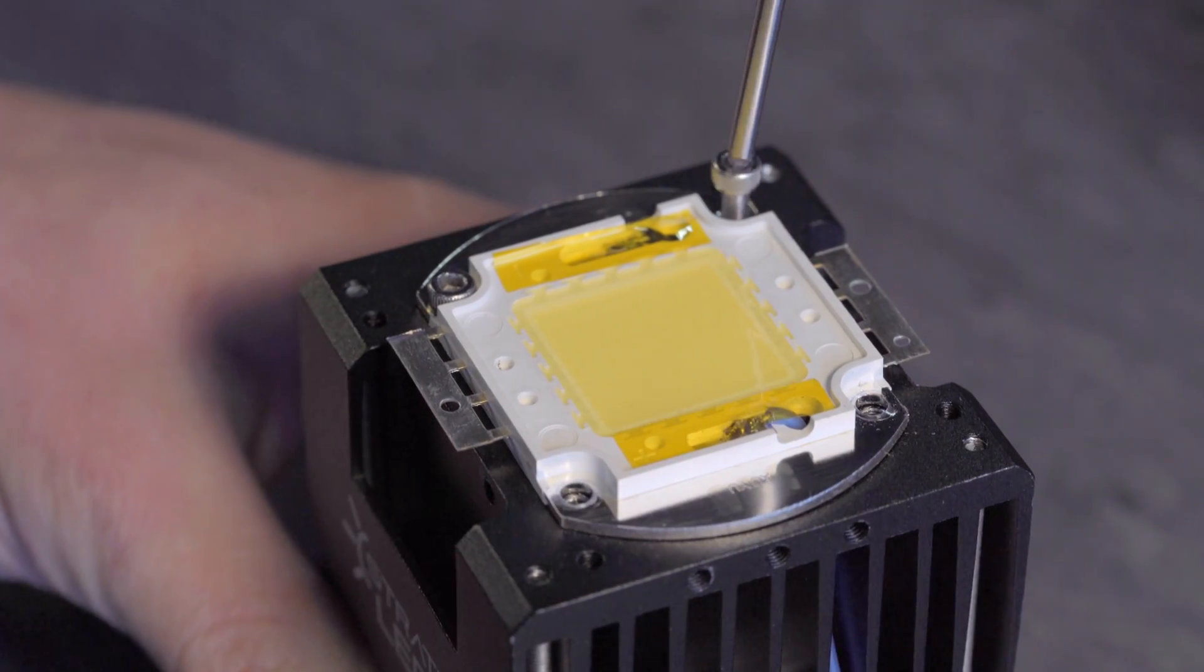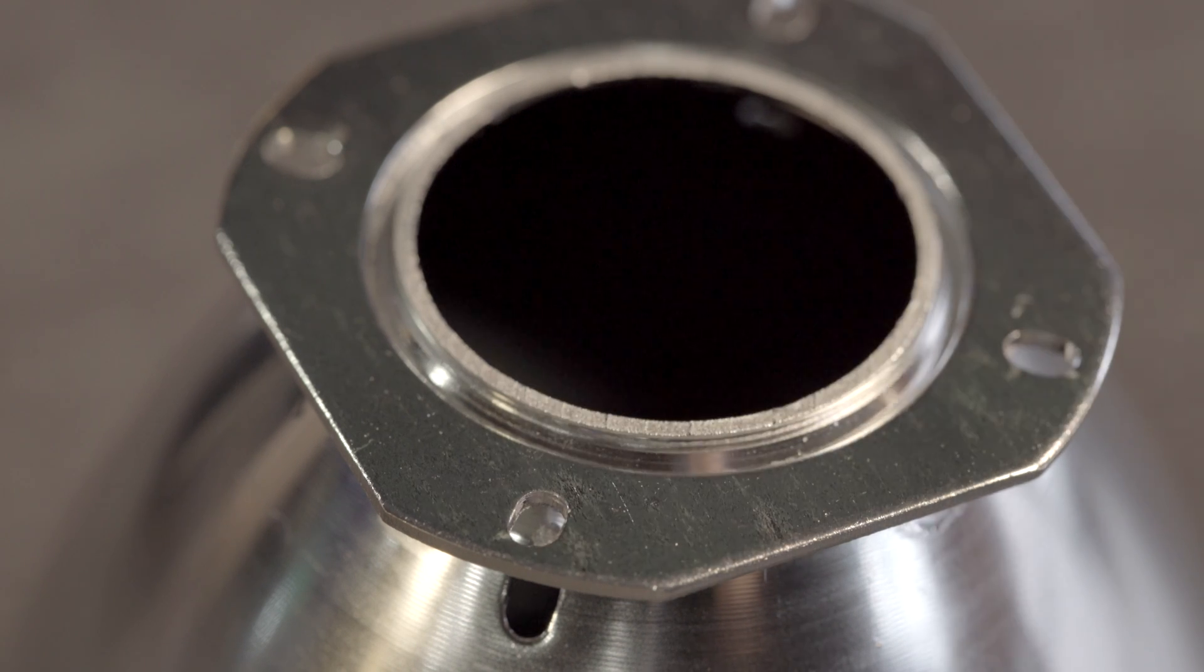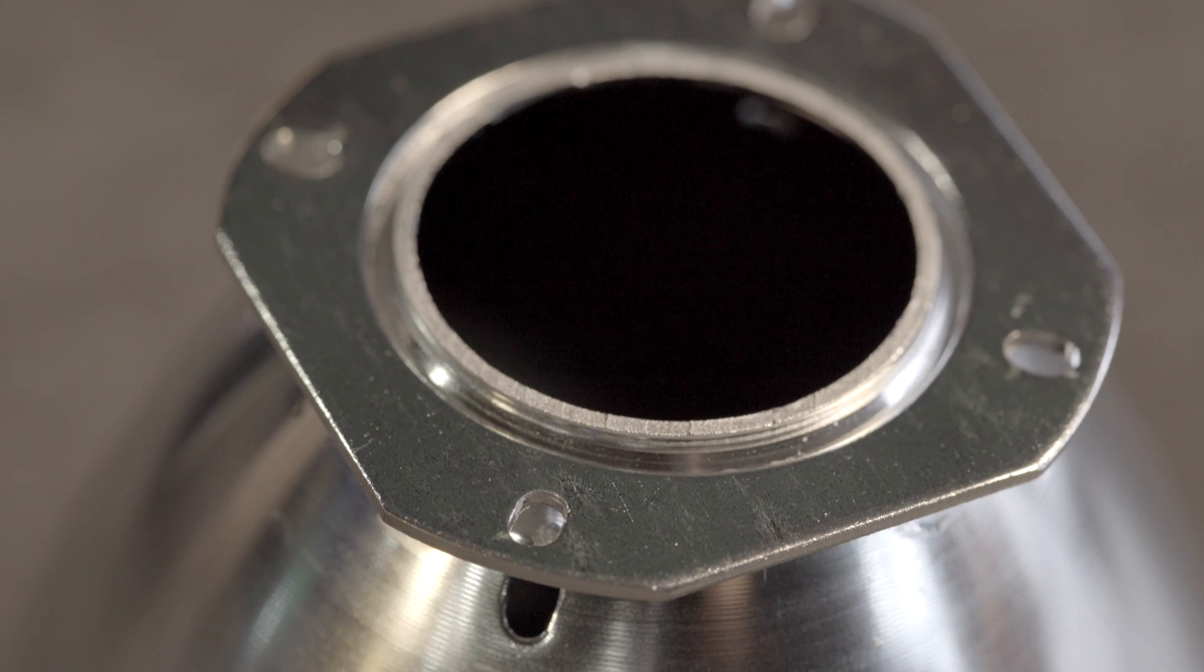Then proceed to remove the four M3x10mm screws holding the LED emitter in place. If the parabolic reflector's mounting plate is bent at all, flatten it out with a pair of pliers.